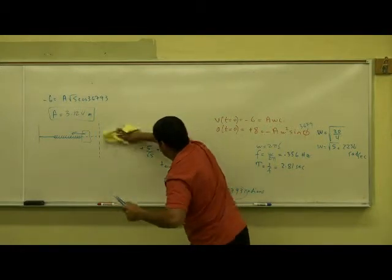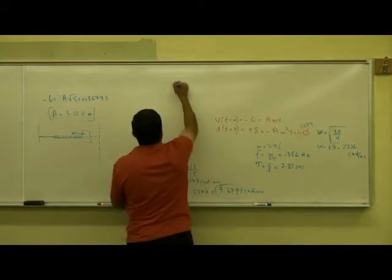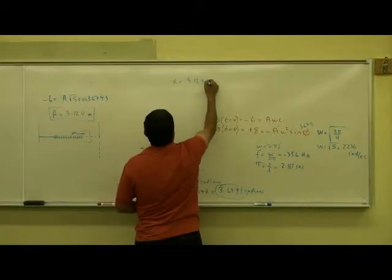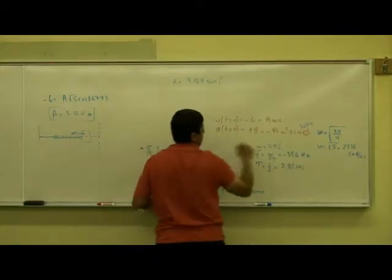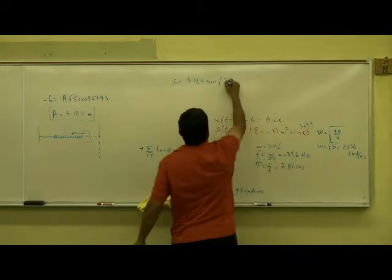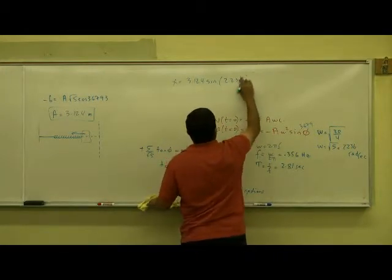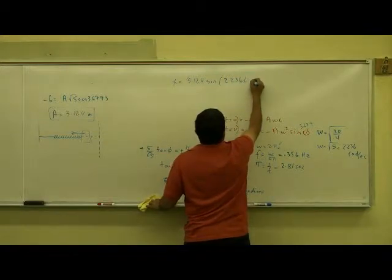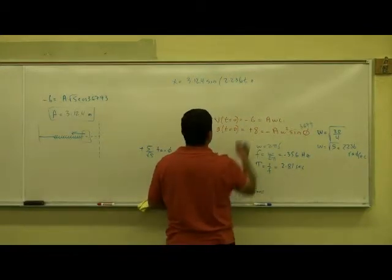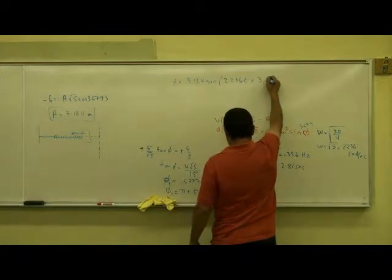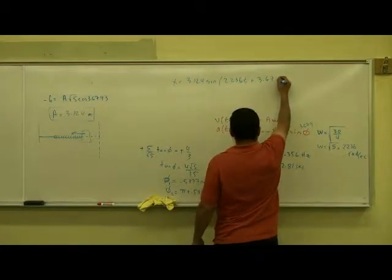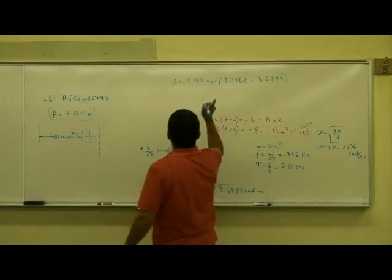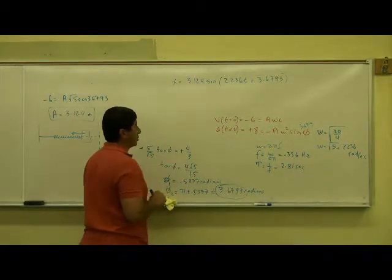What are my completed equations? X is equal to my amplitude 3.124, sine of my omega 2.236, 2.236 T plus my phase angle 3.6793. That's my general velocity, my general position function.